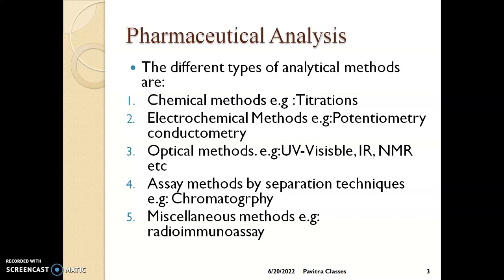The second method is the electrochemical method. Examples include potentiometry and conductometry. The process is similar to chemical analysis — using titrations — but instead of chemical reagents, we use electrodes: a positive electrode and a negative electrode, to measure electrical signals.